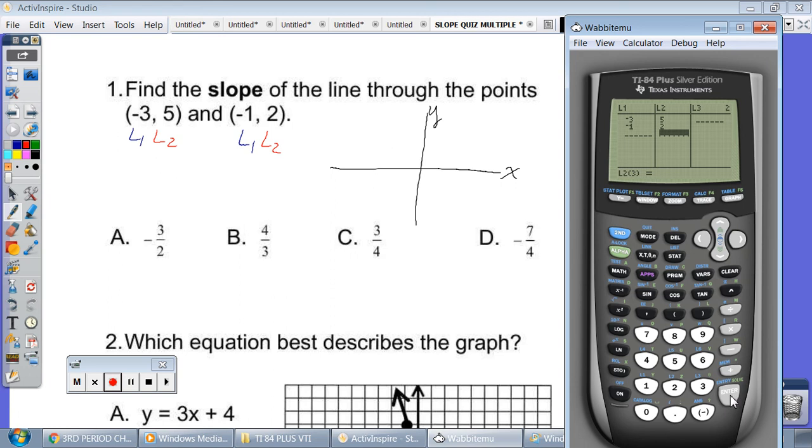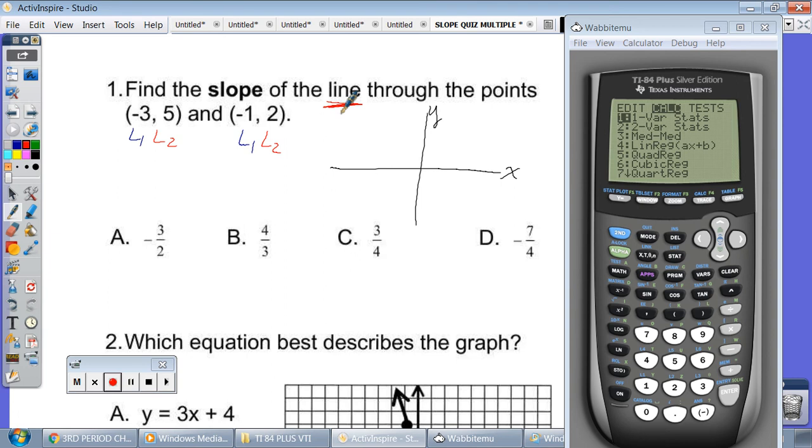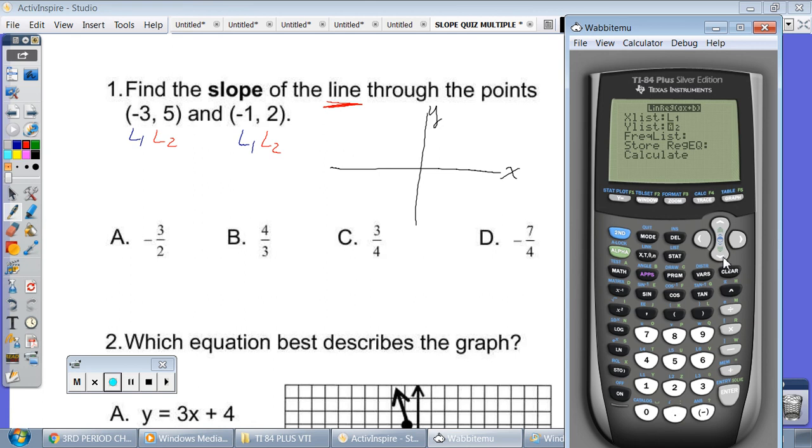If you wanted to, you could type in both the L1s first and then the L2s. It might be a little quicker. So now you have to tell the calculator to calculate something. We're going to go Stat, scroll over to Calc. We're talking about lines, right? The slope of a line. So we're going to go down to number 4 because we're talking about lines. And we're going to hit Enter, scroll down to calculate, hit Enter.